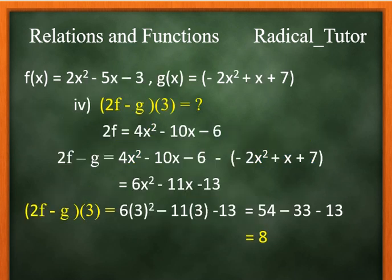Now 2f minus g at 3. First, 2f equals 4x squared minus 10x minus 6. Then 2f minus g equals 4x squared minus 10x minus 6 minus negative 2x squared plus x plus 7. That's 6x squared minus 11x minus 13.